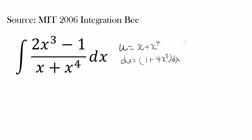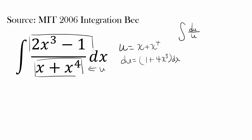So maybe we are pretty close — by differentiating x plus x to the fourth, you are getting something very similar to the numerator, but not quite. Maybe we can still force this to be in the form integral of du over u: once we have our u down below and the derivative of u up top — u prime dx, or du — then we know this is natural log of u plus c. So x plus x to the fourth being our u isn't good enough, since du isn't quite 2x cubed minus 1.